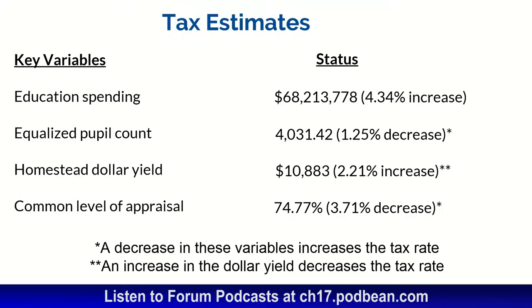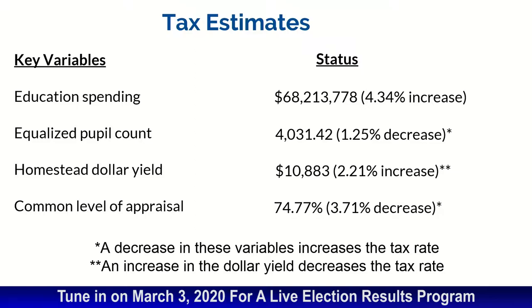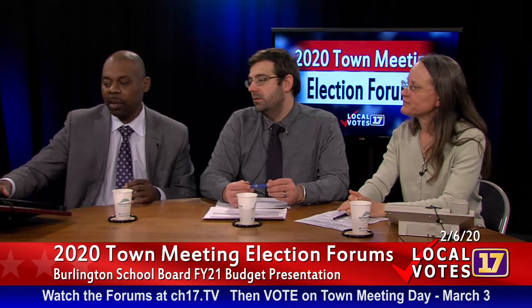And then lastly, the common level of appraisal — sometimes people talk about the CLA, the common level of appraisal — and that was at 74.77, which is a 3.7% decrease. That is significant because there is legislation that says that once it's below 80%, the city should review. And they're working on that; I think they've started. We were below last year — it takes a couple of years to do that. We've had this trouble the last few years. Those are big pieces that have an impact.